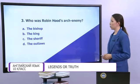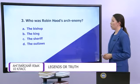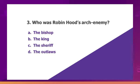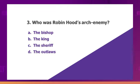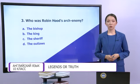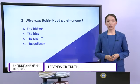And the last question: Who was Robin Hood's arch-enemy? The bishop, the king, the sheriff, or the outlaws? The right answer is C — the sheriff. If you answered all three questions correctly, great job. If you have two correct answers, fine.